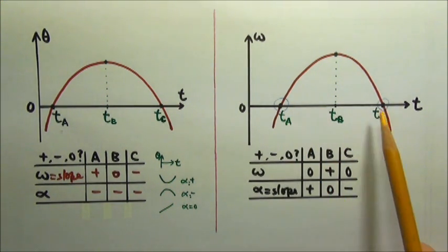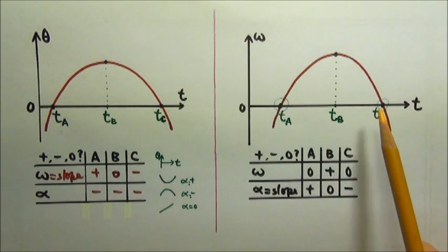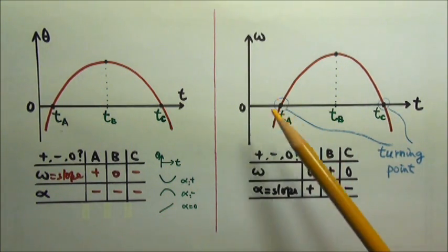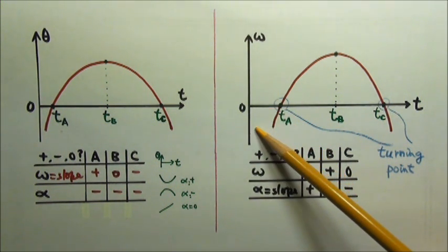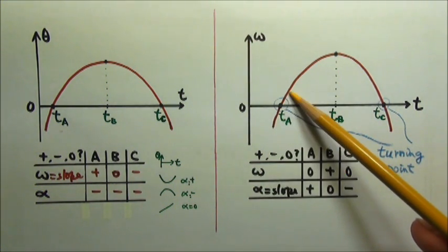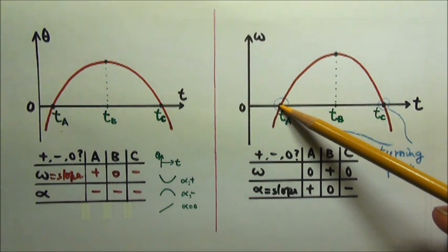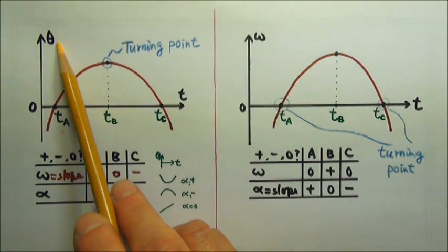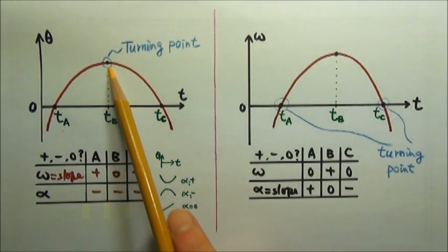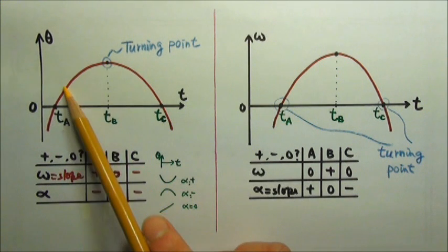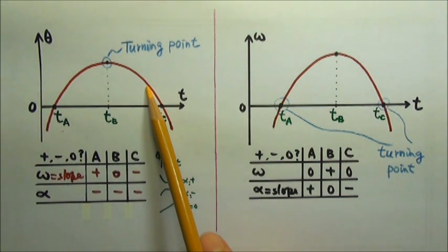At a and at c, the angular velocity is zero. These are the turning points — the angular velocity changes direction at these moments. If positive is the counterclockwise direction and negative is clockwise, before a the object rotates in the negative clockwise direction, and after a it changes to the counterclockwise direction. For an angular displacement graph, b is the turning point. Before b, the angular velocity — the slope — is positive, and after b the slope, the angular velocity, is negative.